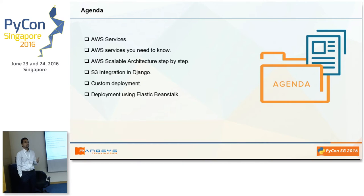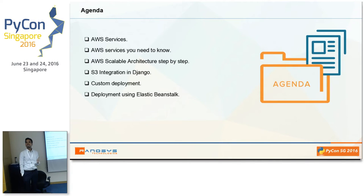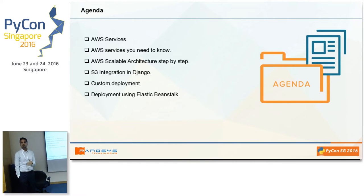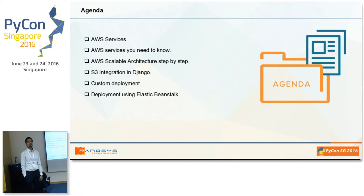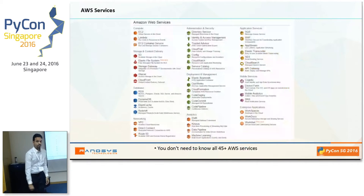Second, we will see the AWS scalable architecture. I will go through some steps to help you think about how to move toward scalability, because this is a topic that can go a long way. Step by step, we will see how to add scalability. Next, we will see Django-specific items, particularly how to use the S3 service and integrate it. And then the deployment methods — there are a couple I will talk about.